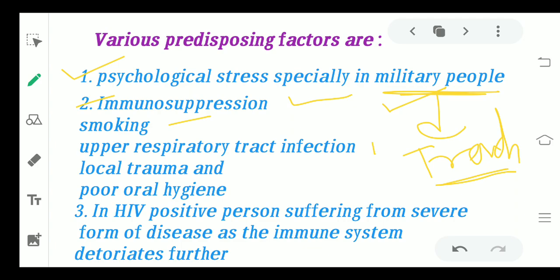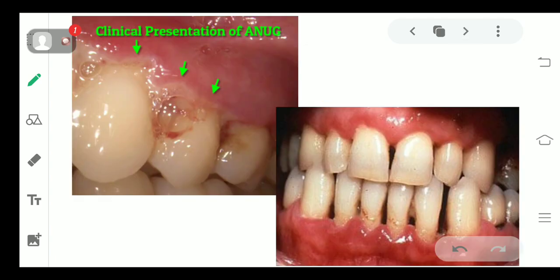Other predisposing factors include smoking, upper respiratory tract infection, local trauma, and poor oral hygiene. HIV-positive people who have a weaker immune system are the ones majorly affected. Here you can see some of the clinical presentation of ANUG, where there are ulcers and bleeding from the gingiva, and most notably the redness — you can see how inflamed and red this area is. This is a characteristic feature of ANUG, especially at sites like the gingival margin, crest, and the interdental gingiva.